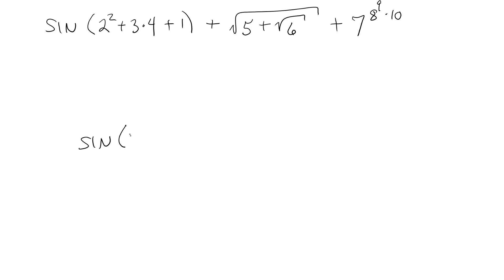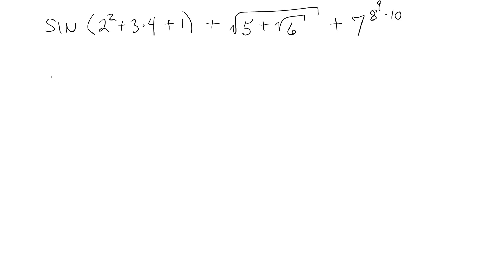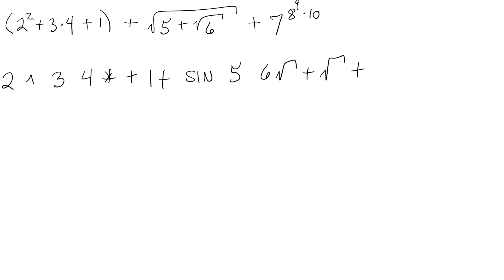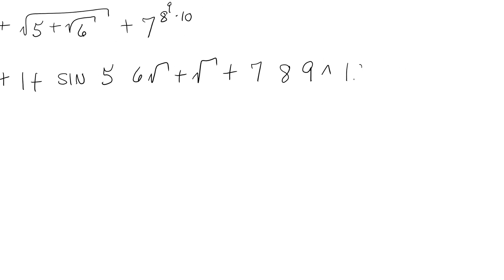For something like sine, if you had sine of 1 you'd just write 1 and then hit the sine button — kind of like that. Pause the video and try to work it out. So starting from left to right: write 2 and 2, then square it. Then 3 and 4 — multiply them and add to the previous value. Then put in 1 and add it to the previous value, then take the sine of all of that. Then write 5, then 6 — take the square root of 6, add it to 5, then take the square root of that sum, and add it to the previous value. Then write 7, then 8, then 9 — 8 gets raised to the 9th power. Then multiply by 10, raise all that to the 7th, and add it back to the previous term.